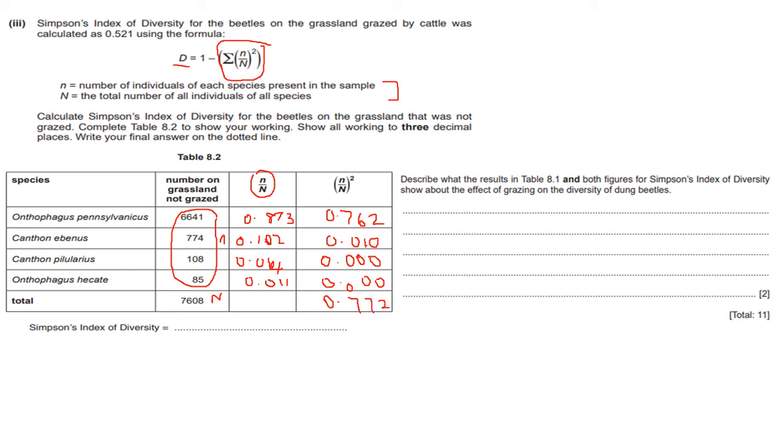Once you get that, you then deduct it from 1. So it would be 1 minus 0.772. And that tells you that your D, your Simpson's index of diversity, is 0.228. And that's how you calculate Simpson's index of diversity.